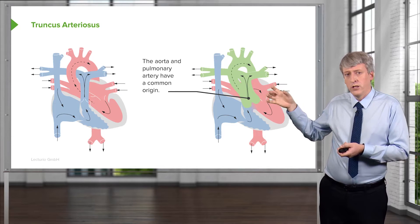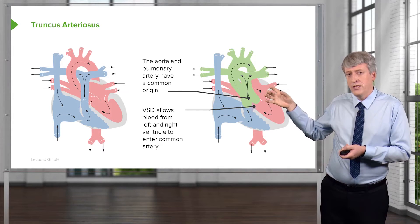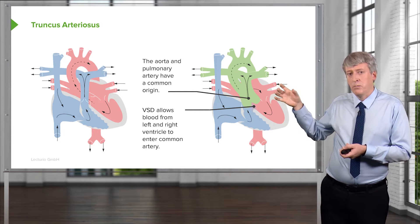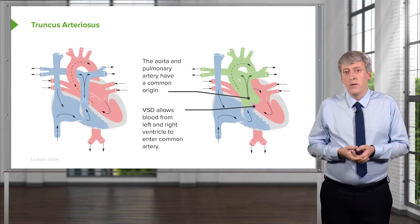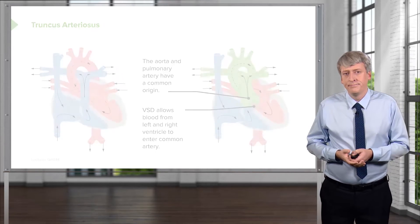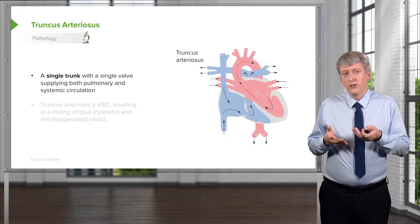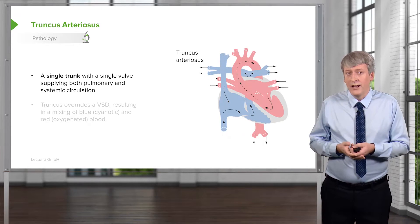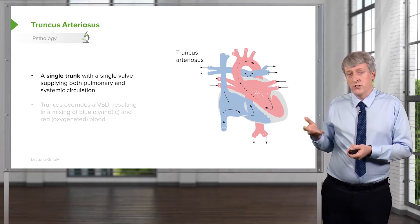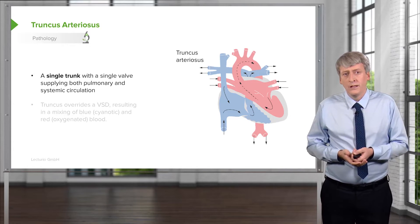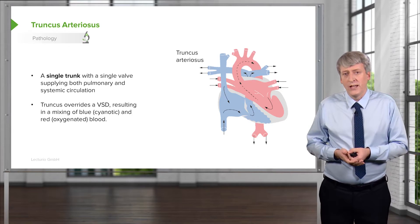The aorta and the pulmonary artery share a common origin sitting over a VSD, which allows blood from the left and right sides to mix together and then travel up that common trunk. The patient has a single valve supplying both the pulmonary and systemic circulation. You can see why this baby would be born blue — the truncus overrides the VSD, resulting in that mixing lesion.